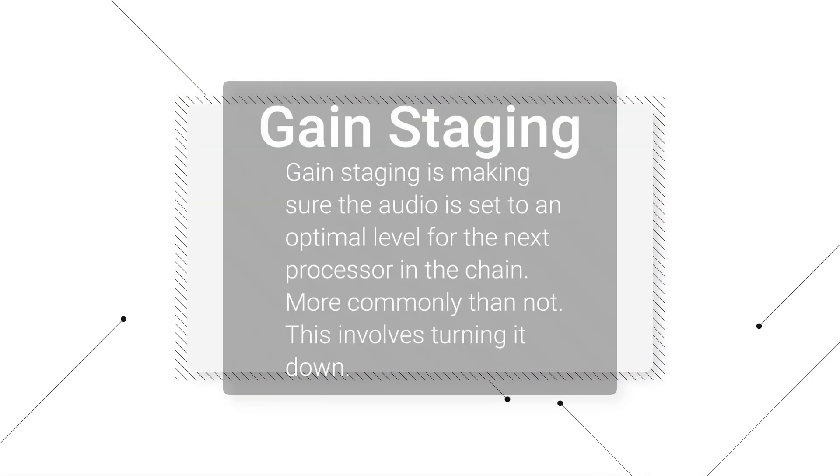Peak meters make gain staging a lot simpler. For example, if we have an audio input peaking at minus six and we insert a plugin on that channel and its peak meter is now reading minus three, we know that process is adding three decibels of gain. We can then reduce that back down to minus six, thus gain staging the signal and not continuously adding unwanted loudness, which can cause problems with headroom in your mix.